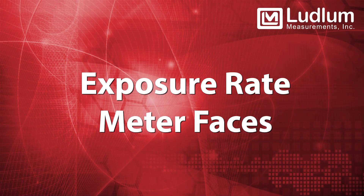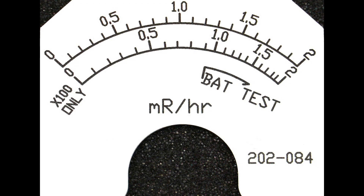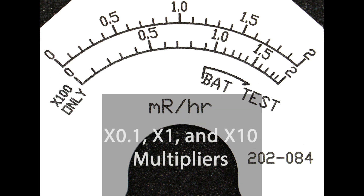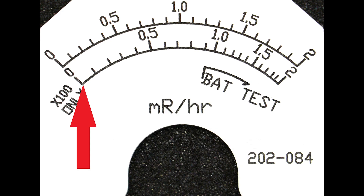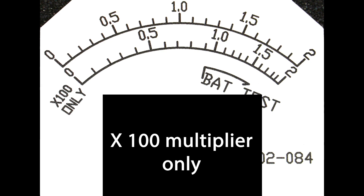Exposure rate meter faces are each designed to be used with specific detectors. This example is for the Ludlum Model 44-6 and 44-38 GM detectors, and has a dual-scale, or 2-arc, exposure rate meter face. The top scale reads 0–2 mr per hour and is valid for the times 0.1, times 1, and times 10 multipliers. The bottom nonlinear scale also reads 0–2 mr per hour, but is valid only for the times 100 multiplier.